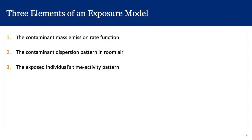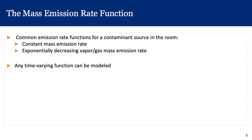The three most fundamental elements in any exposure model are as follows: first, we need to know the rate at which the contaminant is being emitted — this is the mass emission rate. Second, we need to know the dispersion of the contaminant in the room air or the environment air. Third, we need to know where the worker or individual is in the room — that is, the individual's time-activity pattern.